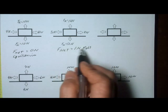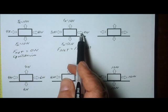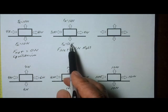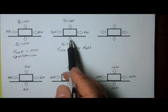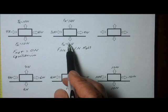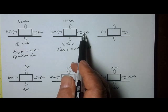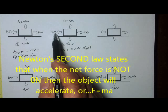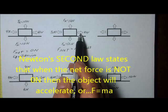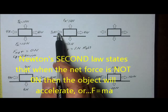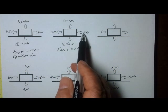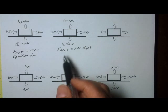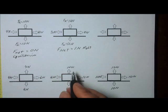Let's go over that again. The 10 newtons up and 10 newtons down cancel each other out. However, 4 newtons to the right and 3 newtons to the left means 3 of the 4 newtons is canceled out, and the net force is 1 newton to the right.